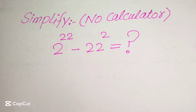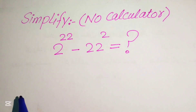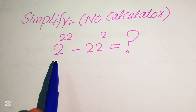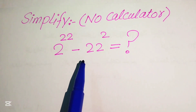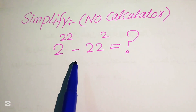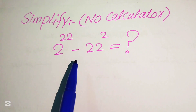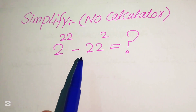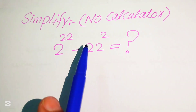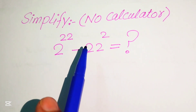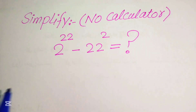Hello everyone. How to simplify this nice algebraic expression: 2 to the power of 22 minus 22 to the power of 2. We will write this algebraic expression in simplified form, but remember that a calculator is not allowed in this problem, so we will show all of the working here.